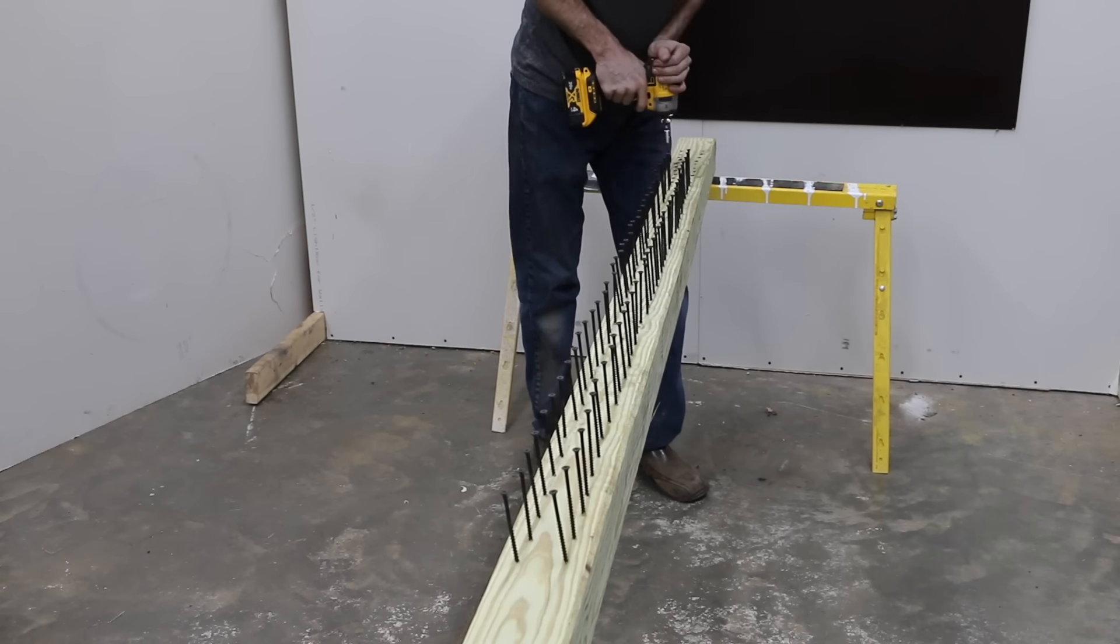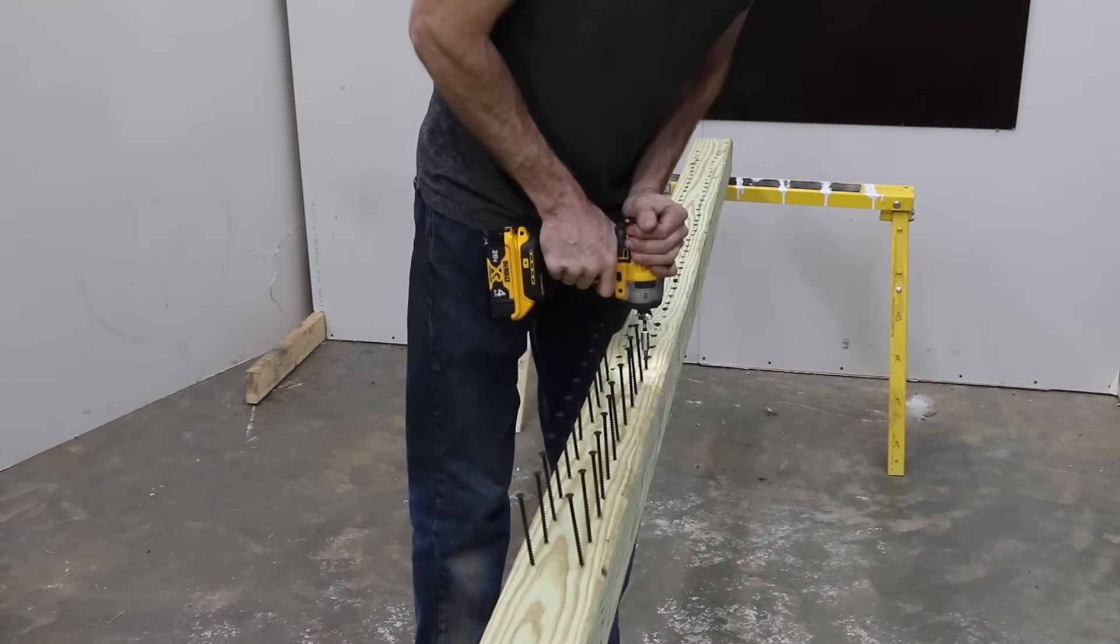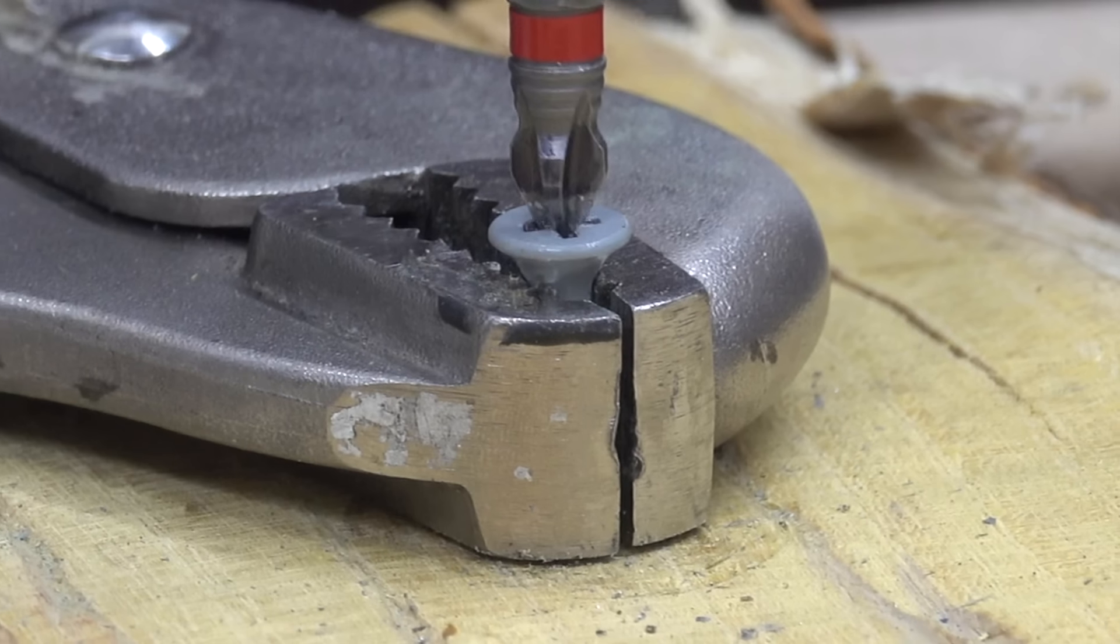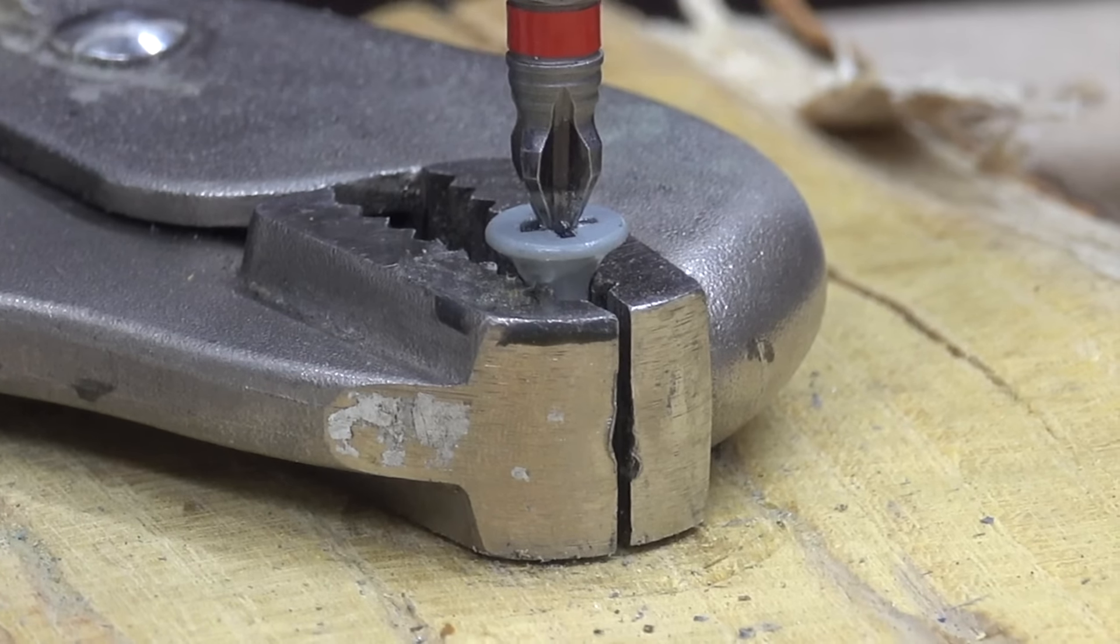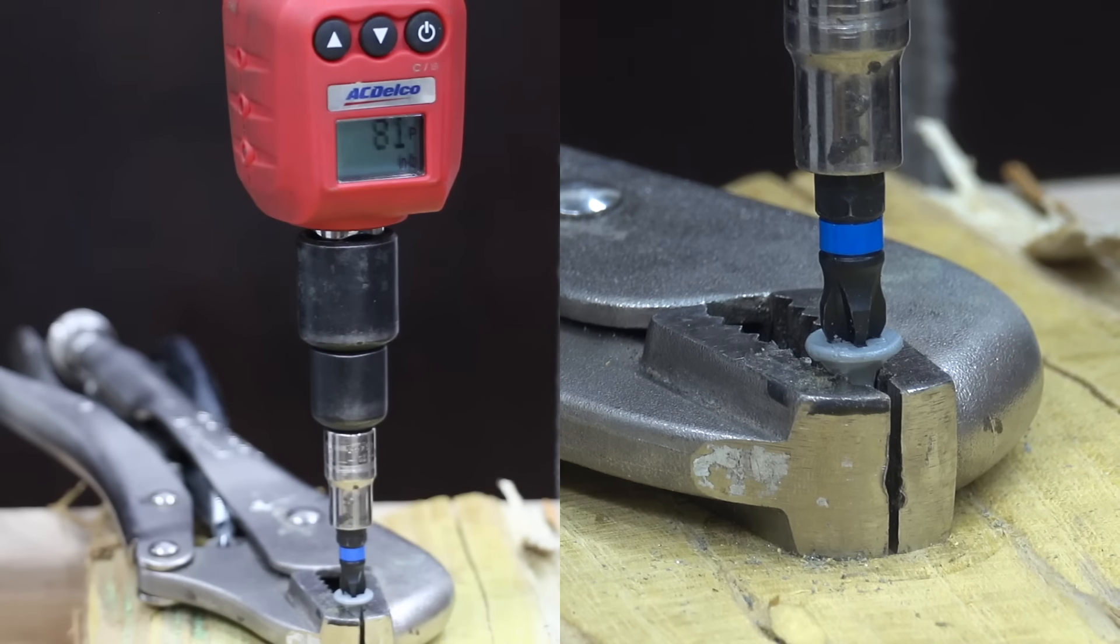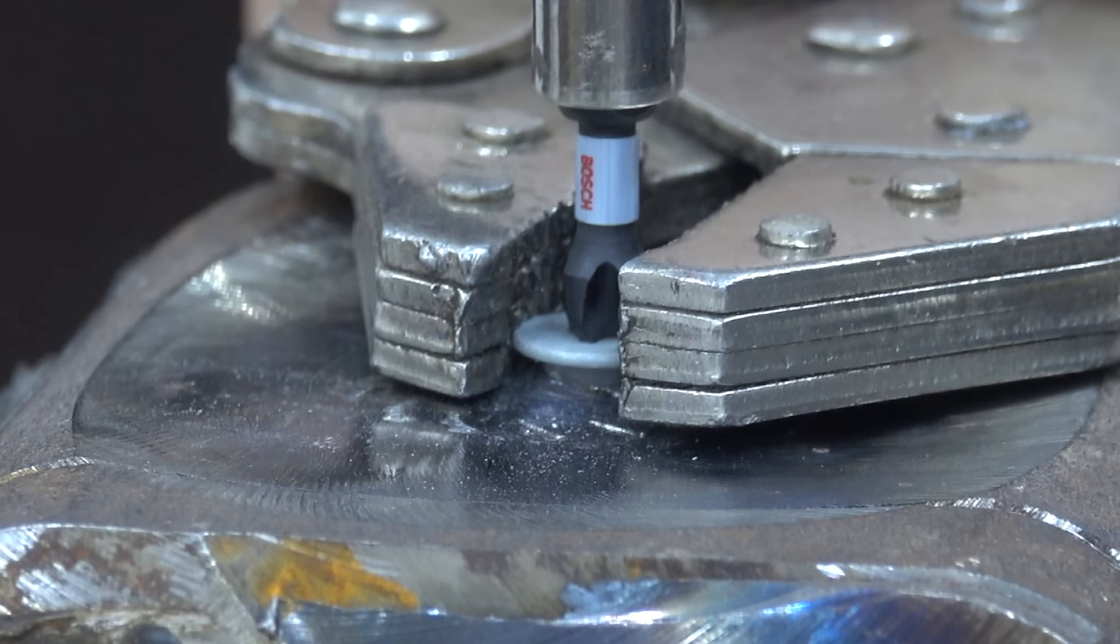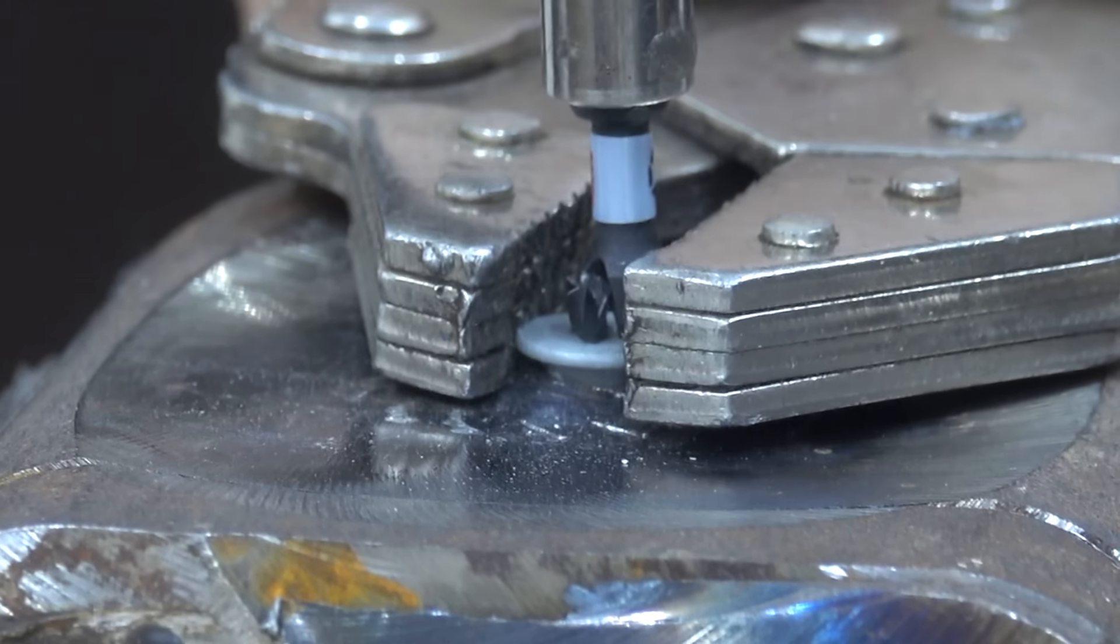In the first test, we'll drive 100 screws for each brand of impact bit and then compare the amount of wear under a microscope. We'll measure the amount of twisting force required for the driver bits to cam out when they are new. Then we'll measure how much twisting force is required to cause the bits to cam out after driving 100 screws. Finally, we'll measure the amount of twisting force required to break each driver bit.